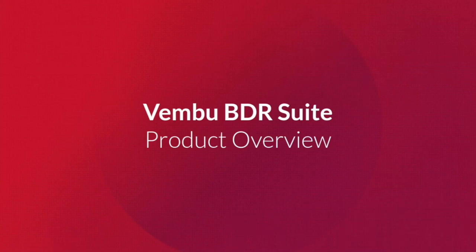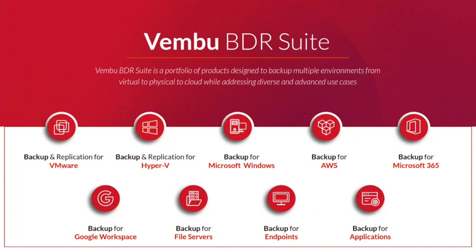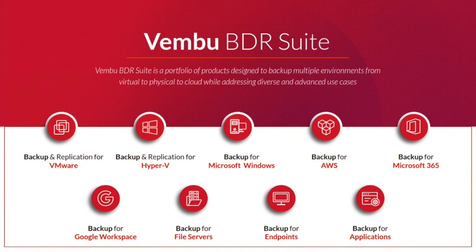Rainbow BDR Suite is the flagship product of Rainbow — a complete package that encapsulates many product features. You can back up your virtual environment, physical Windows machines, cloud workloads, SaaS applications, and take granular-level backups for file servers, endpoints, and applications. For virtual environments, this refers to backup and replication for VMware and Hyper-V. For physical Windows backup, it refers to disk image-level backup. AWS workloads cover EC2 instance backups.